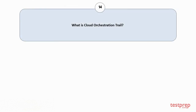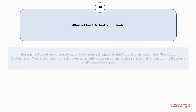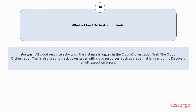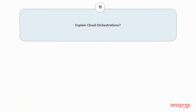Question number fourteen: What is cloud orchestration trail? All cloud resource activity on the instance is logged in the cloud orchestration trail. The cloud orchestration trail is also used to track down issues with cloud resources, such as credential failures during discovery or API execution errors.